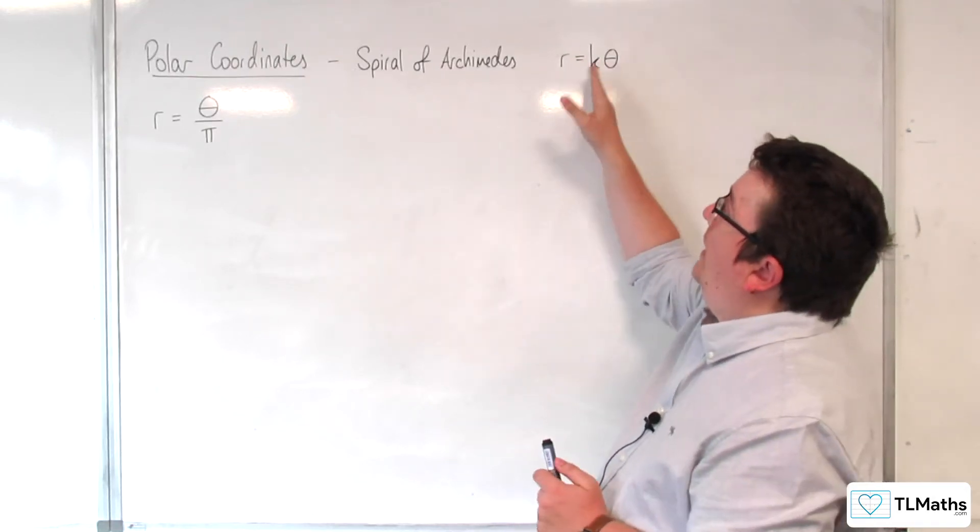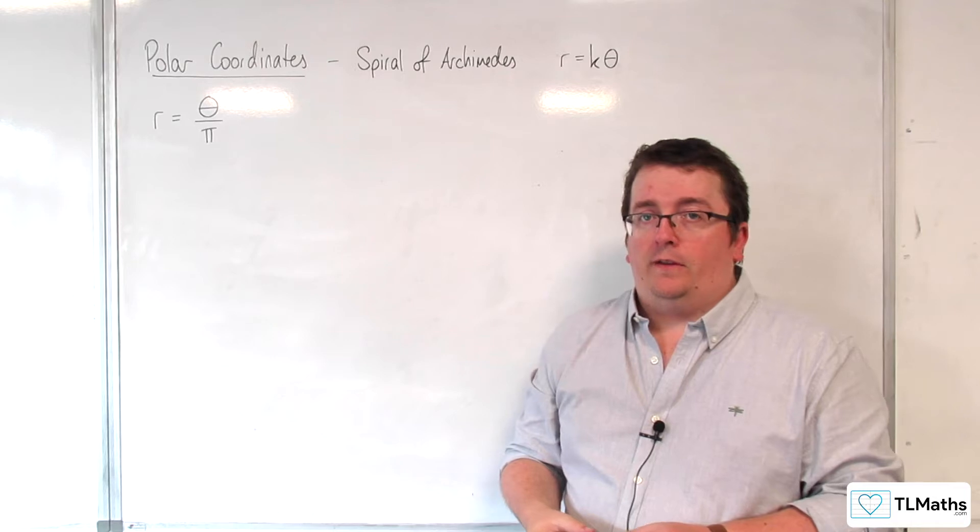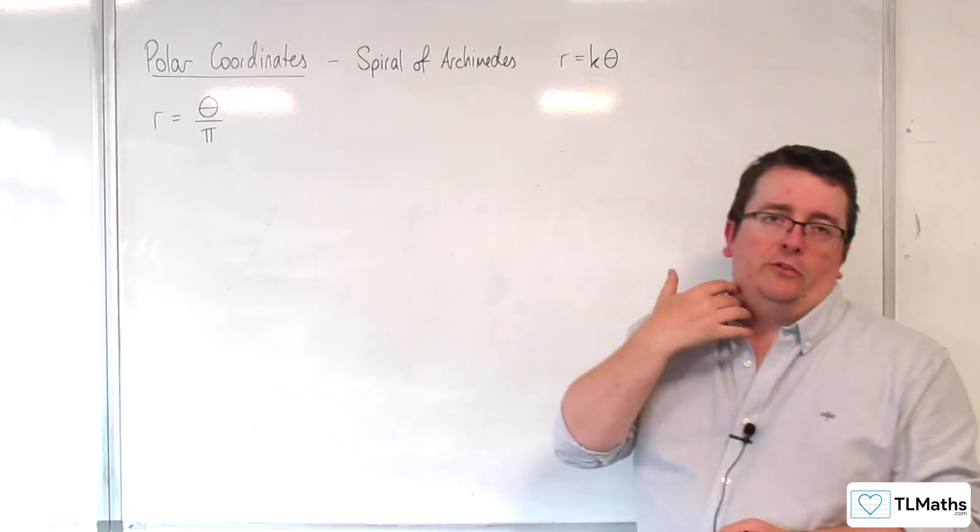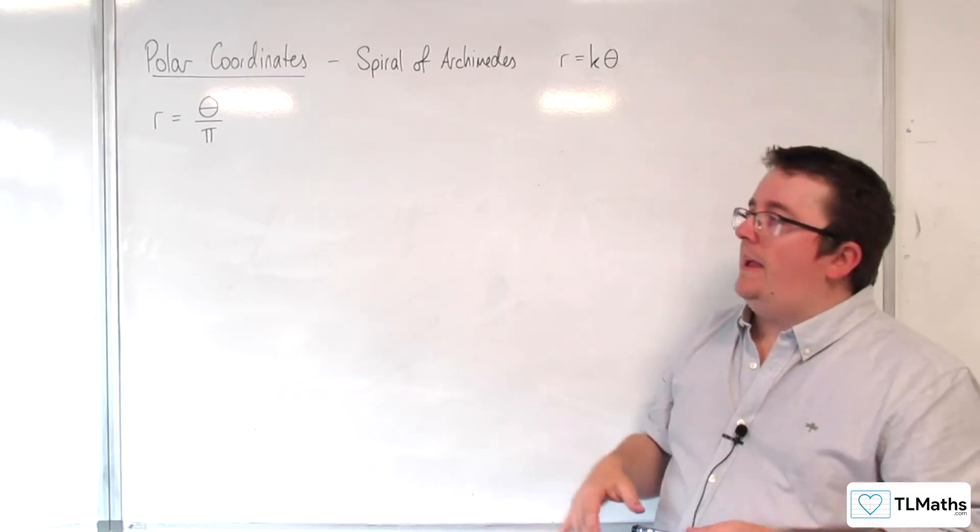Where, in our case, k here would be 1 over pi. What that does is it makes the numbers quite nice where it's crossing the axes.